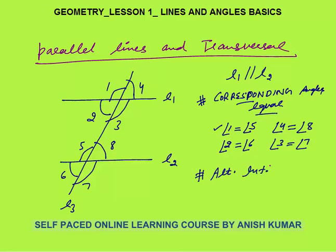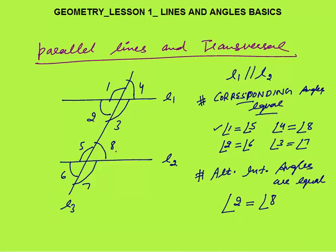Alternate interior angles are also equal, only when the lines are parallel and a transversal cuts them. So angle 2 equals angle 8, and angle 3 equals angle 5.